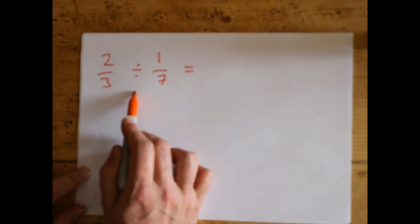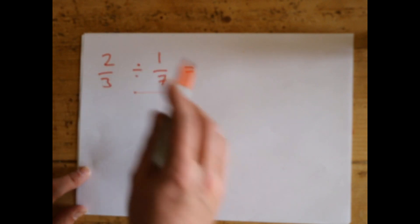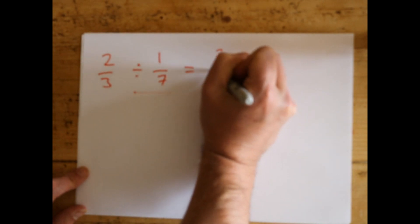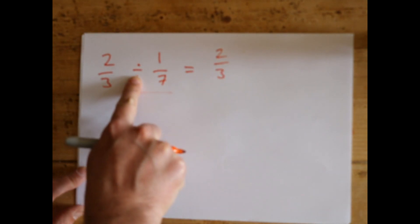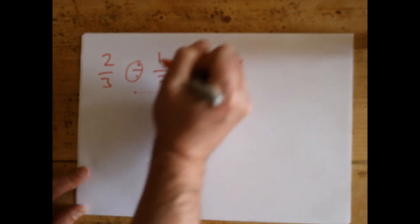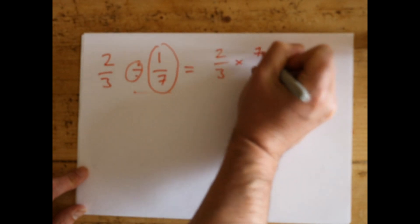Just make sure you do this with the second one. Instead of dividing by 1/7, you can completely change this to something that's nice and easy. Leave the 2/3 the same. Instead of divide, we'll switch that with times. Now because we've switched that, we need to switch this. So instead of 1/7, you write 7/1.